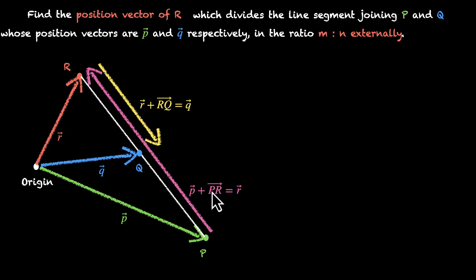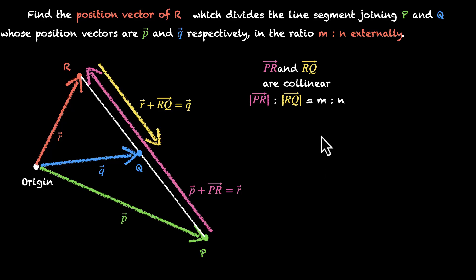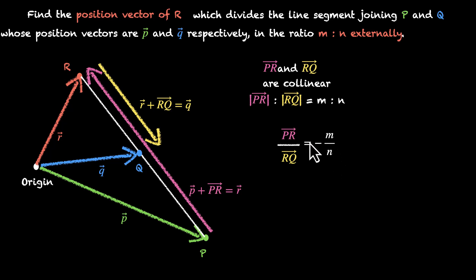We know two things about pr vector and rq vector: first, they are collinear; second, the ratio of their magnitudes is m is to n. But we have to be careful here — because one of them is in the opposite direction, when we write the ratio equation we must add a negative sign. So pr vector divided by rq vector equals minus m by n. This vector goes in one direction and the other comes back in the opposite direction — that's where the negative sign comes from.